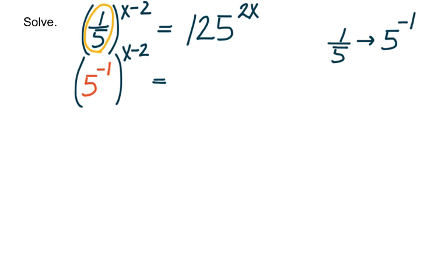So on the right-hand side, I can rewrite 125 if I realize that 125 is actually 5 to the third power, 5 cubed. So I'll rewrite 125 as 5 cubed, and then it's raised to the 2x power.